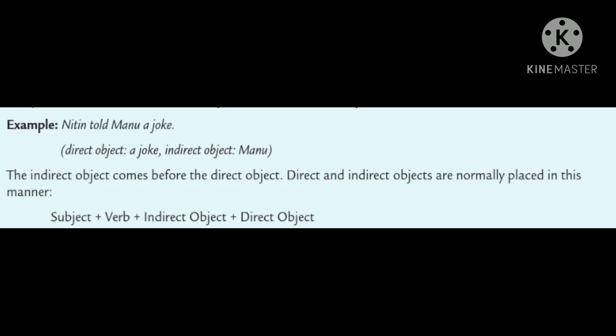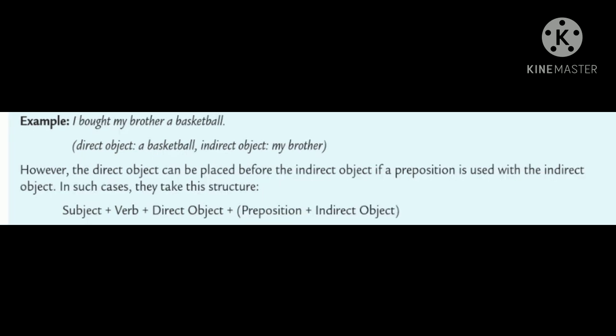We have subject, verb, indirect object, direct object. Example: I bought my brother a basketball. The direct object is basketball. The indirect object is my brother.